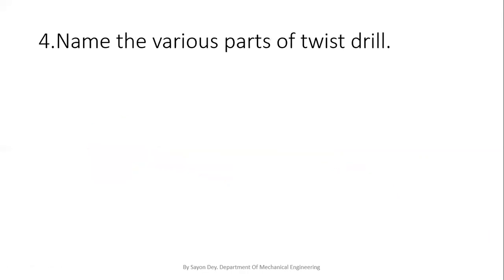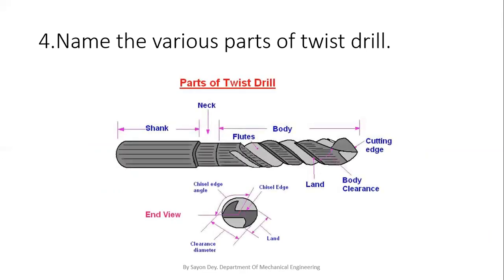The next question is: name the various parts of a twist drill. These are all the parts shown in the picture — this is the entire portion of a twist drill, also called a drill bit. The portion that we hold in the drill machine is called the shank. After the shank, there is a portion called the neck. After the neck, the entire portion is called the body. And here are the cutting edges — it is also called a multipoint cutting tool.